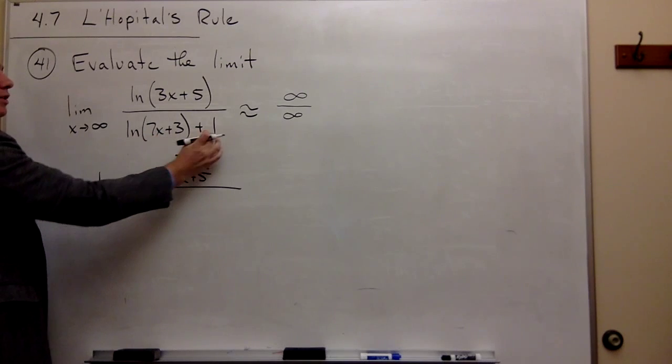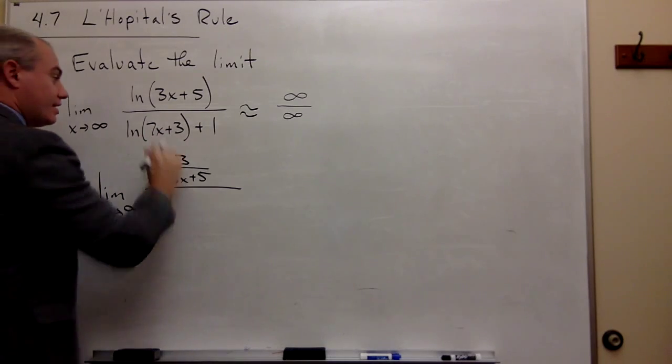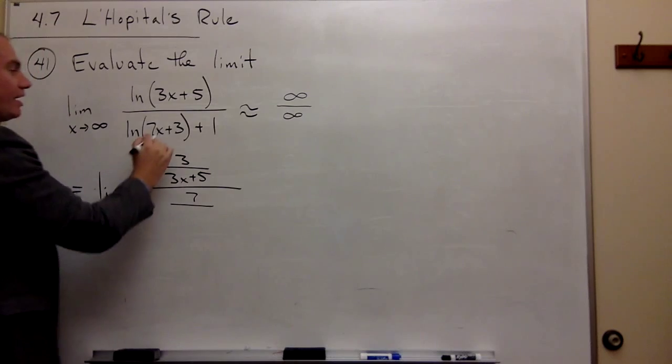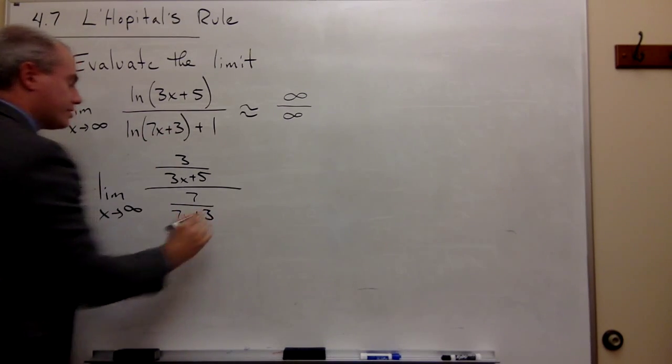The derivative of the bottom, the derivative of 1 is 0, and the derivative of ln of 7x plus 3 is the derivative of this guy, 7, divided by this guy, which is 7x plus 3.